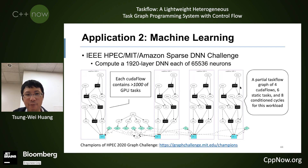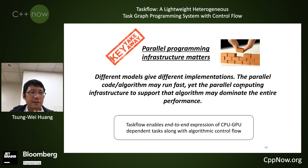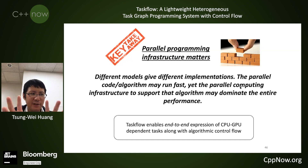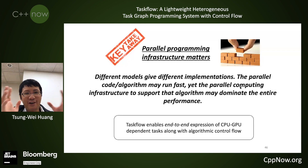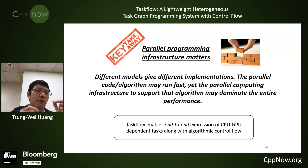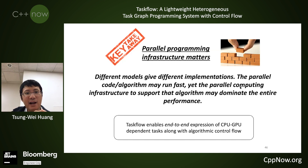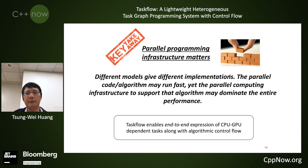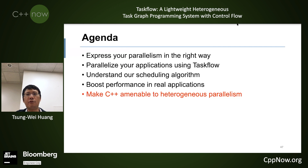The takeaway: parallel programming infrastructure is just as important as the parallel solution itself. Different models give very different implementations. The parallel algorithm itself may run fast, but you must ensure the parallel computing infrastructure doesn't become a bottleneck. As today's hardware — GPUs and CPUs — run very fast, the overhead of execution starts to matter. You've got to make sure the parallel infrastructure does not become overhead to the overall execution.